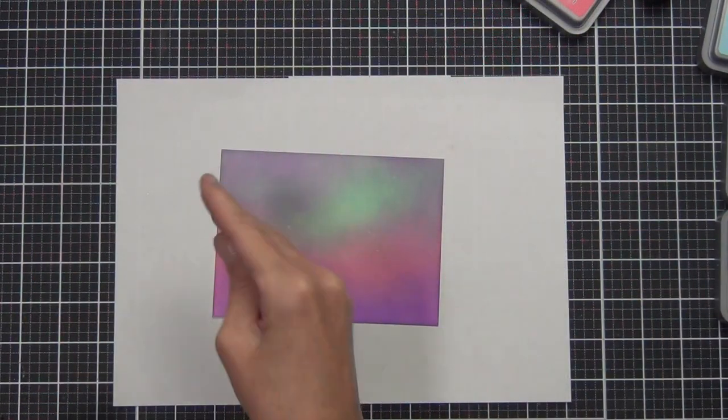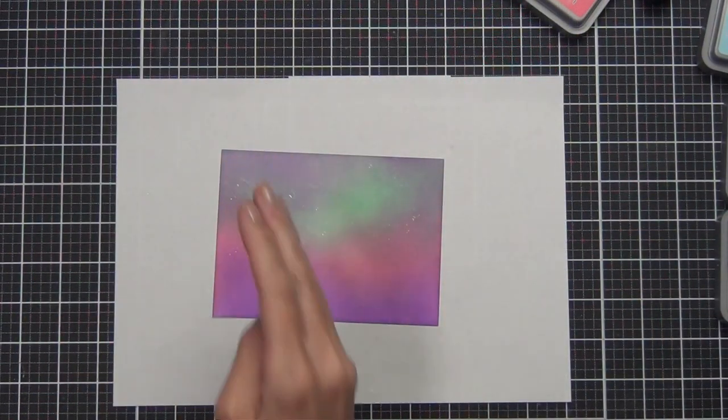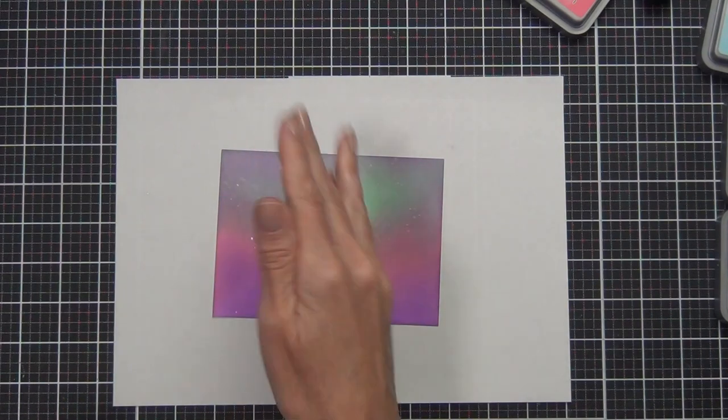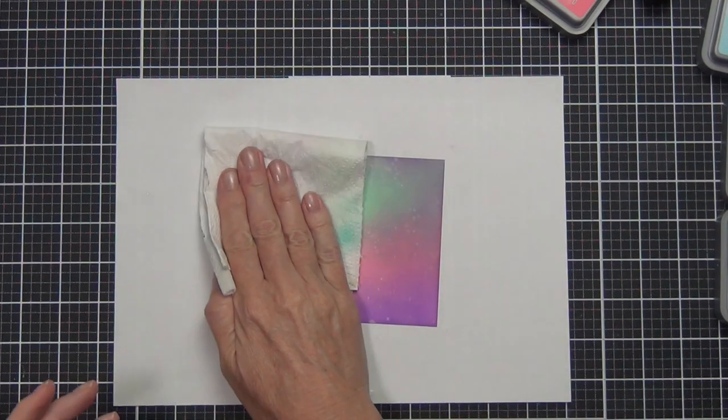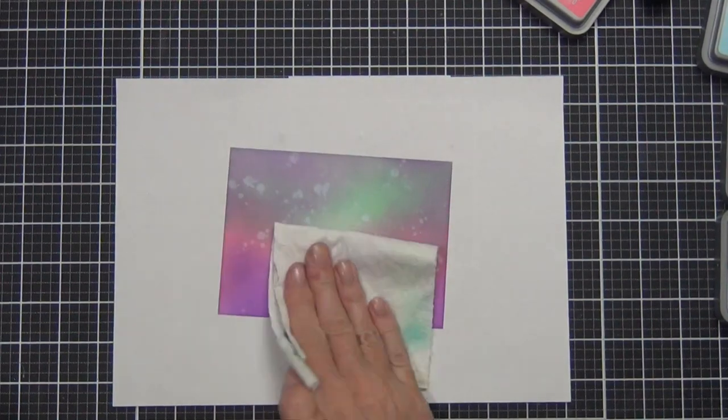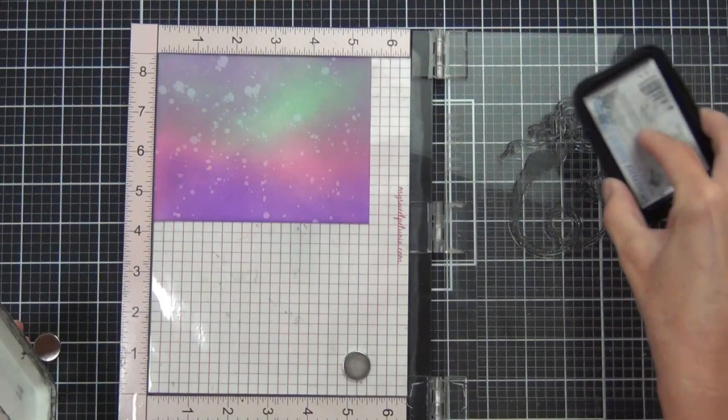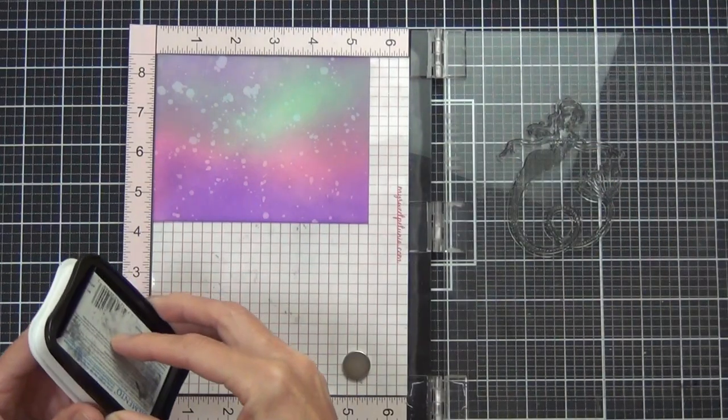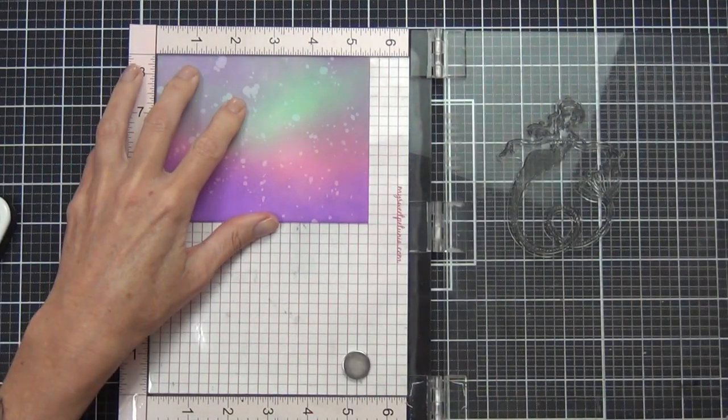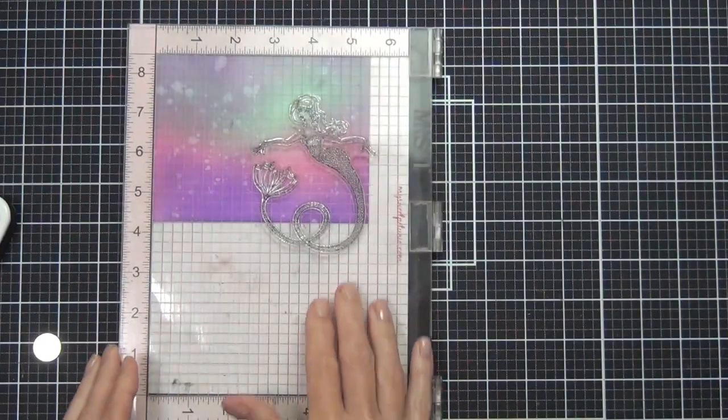I'm splashing on a little bit of water here and then picking up that color with some paper towel just to add some interest to my background. Then I'm just going to stamp the mermaid image, this is the glorious mermaid.